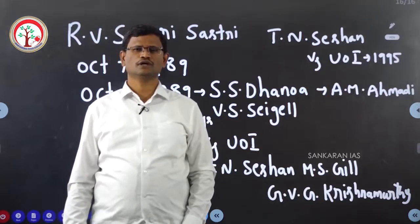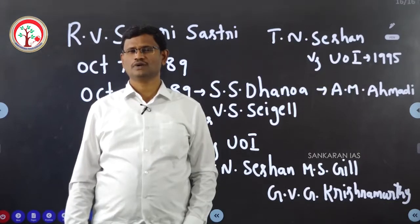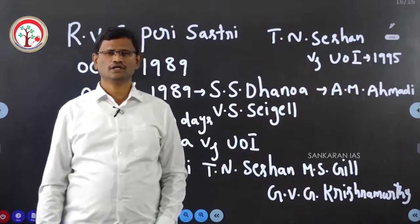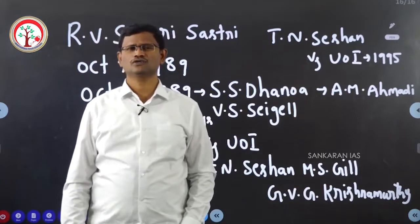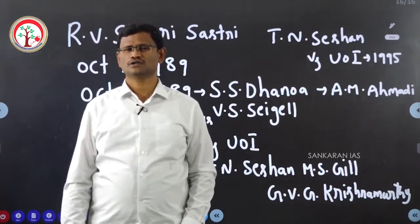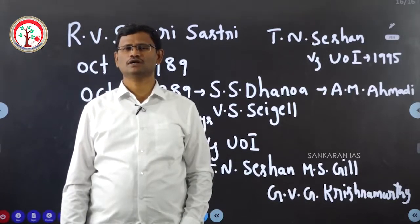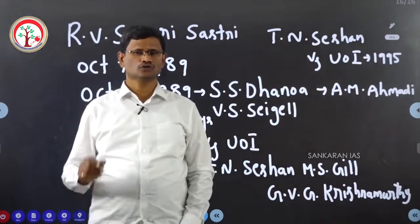Today in this particular video, we will try to discuss about the Election Commission of India — how a single-member Election Commission of India became a multi-member Election Commission of India. Article 324 of the Indian Constitution deals with the Election Commission of India and the superintendence, direction and control of elections to the Parliament, state legislatures, and to the office of the President and Vice President.